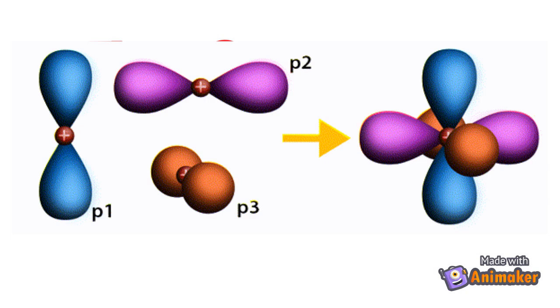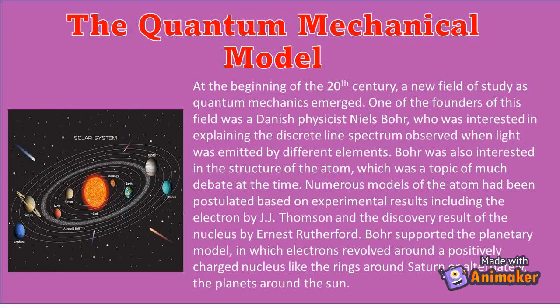So now let's start reviewing the Bohr model of the atom. At the beginning of the 20th century, a new field of study as quantum mechanics emerged. One of the founders of this field was a Danish physicist, Niels Bohr, who was interested in explaining the discrete line spectrum observed when light was emitted by different elements.